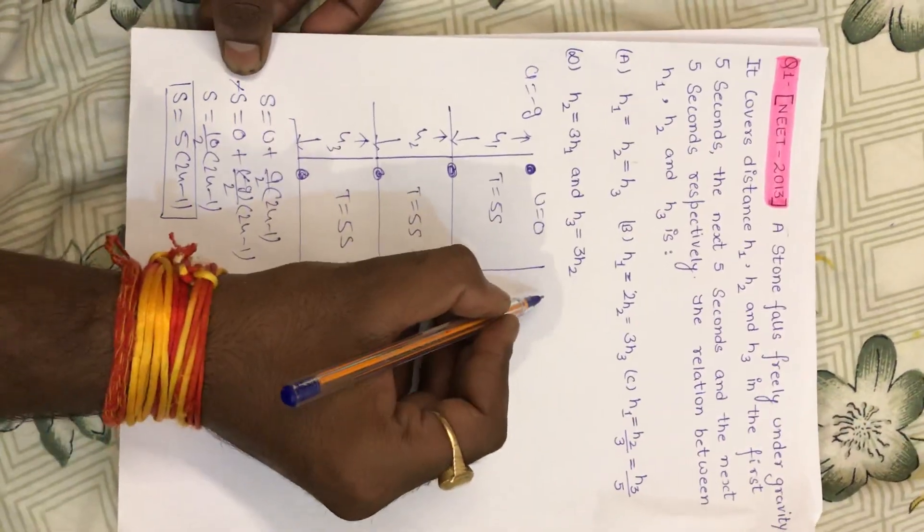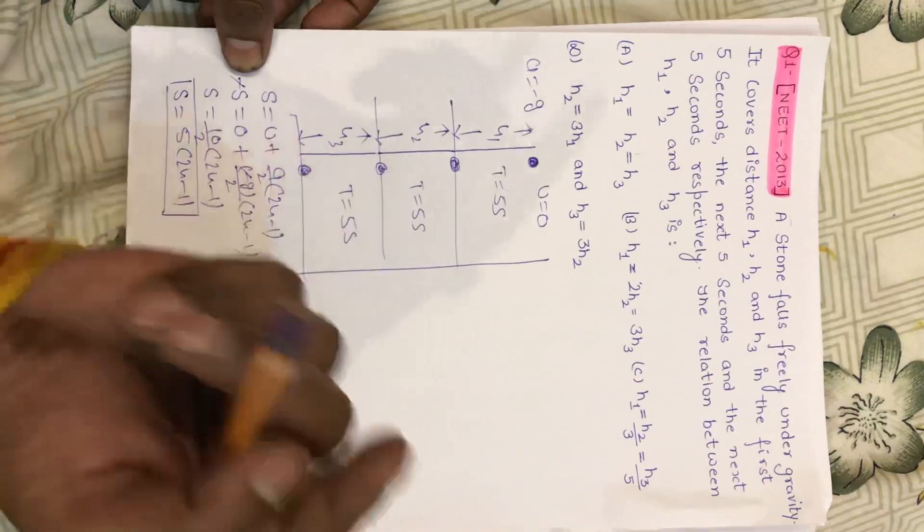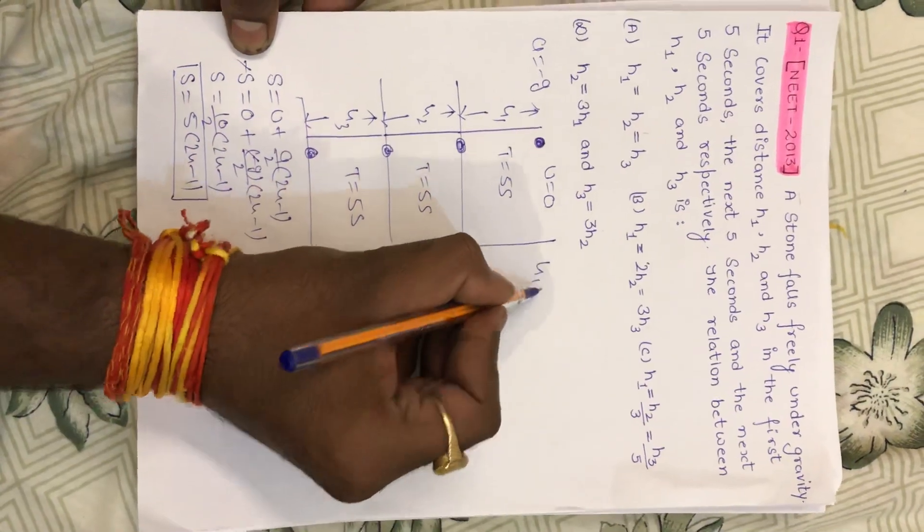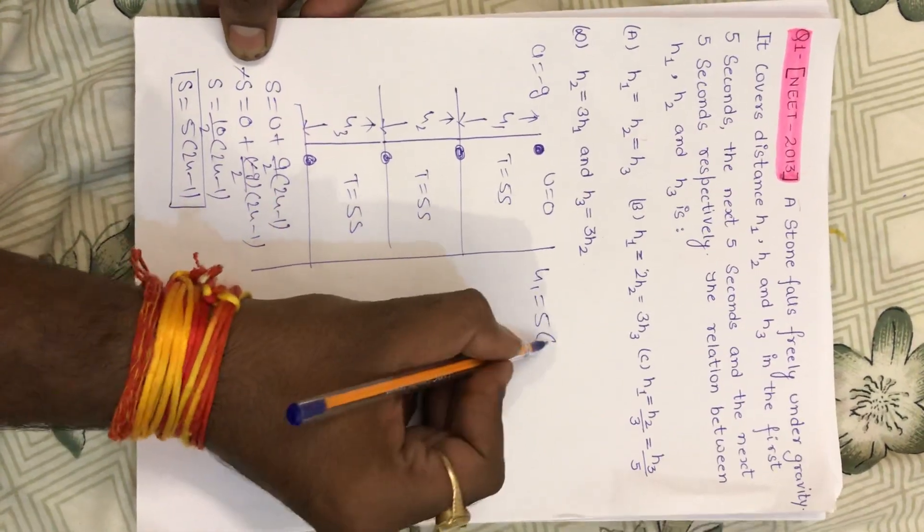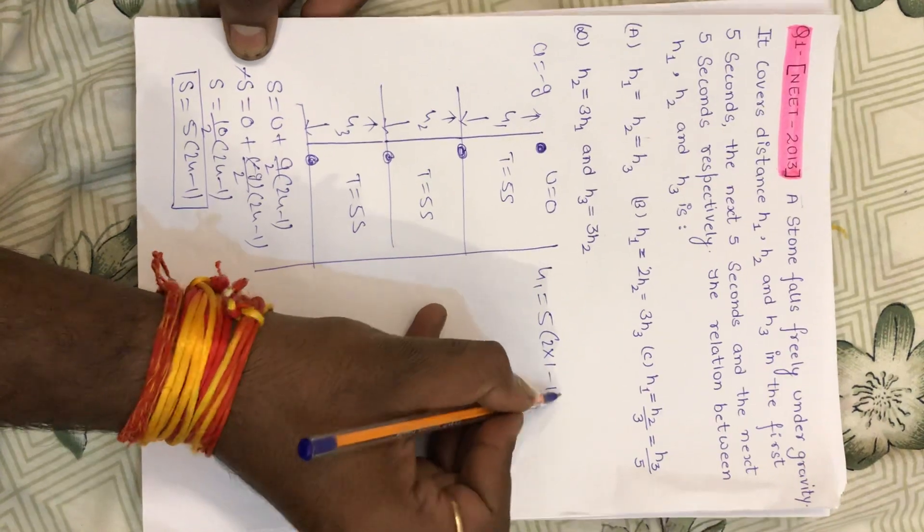Let's see. The first 5 seconds means the first second. If I see, the height is h1. The height is 5. The first second means n value is 1.